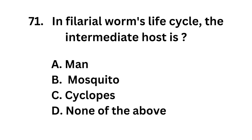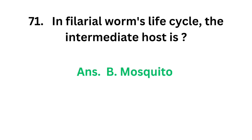Question number 71. In filarial worms life cycle, the intermediate host is: Option A, man; Option B, mosquito; Option C, cyclops; Option D, none of the above. The correct answer is Option B, mosquito. In filarial worms life cycle, the intermediate host is the mosquito.